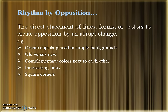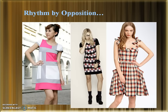Next comes Rhythm by Opposition, which involves the direct placement of lines, forms and colors to create opposition through an abrupt change. Examples include ornate objects placed on a simple background, old versus new, complementary colors next to each other, intersecting lines and square corners. All these examples are opposite to each other, giving a sense of vibration and emphasizing each other. In the garment examples shown, rhythm by opposition is achieved through contrasting colors.